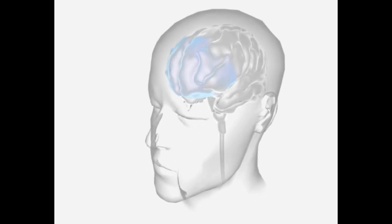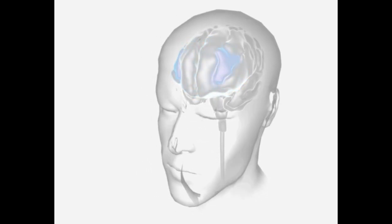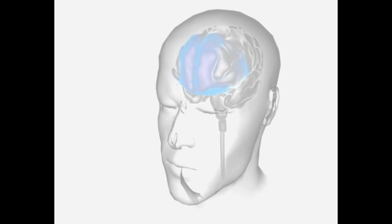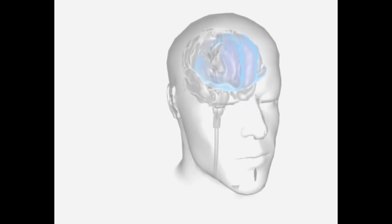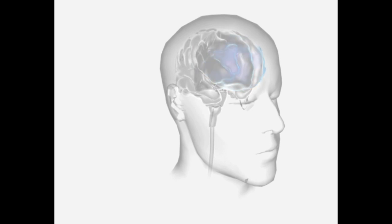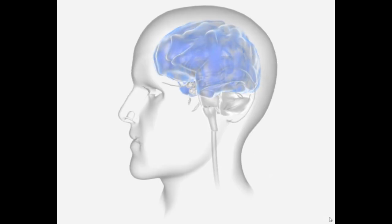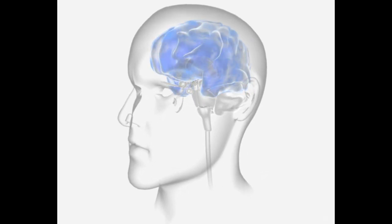In the neocortex, cortical spreading depression (CPD) is a key phenomenon in the pathophysiology of migraine with aura. It is a wave of neuronal depolarization followed by prolonged inhibition, which propagates slowly through the cortex at a rate of 3 to 5 millimeters per minute.